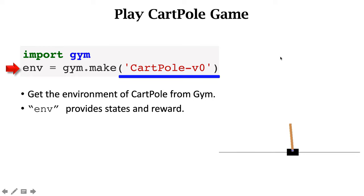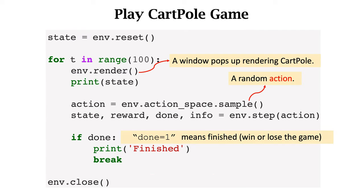The environment uses Newton's laws to compute the movement of the cart and the pole based on position, velocity, and force. We can control the agent to interact with the environment. First, use the function env.reset to reset the environment, so the cart and pole go back to the origin. The reset function returns the initial state.